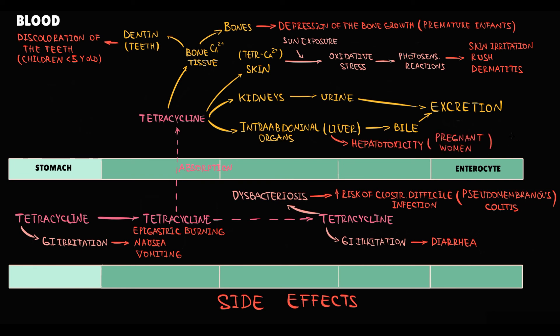Because tetracycline is excreted by the kidneys, it can cause kidney injury. First of all, tetracycline can disrupt the normal secretion of vasopressin that results in nephrogenic diabetes insipidus. And also, outdated tetracycline is extremely toxic for proximal renal tubules, and this can cause so-called Fanconi's syndrome. So under no circumstances should outdated tetracycline be taken.